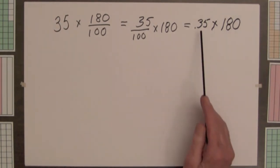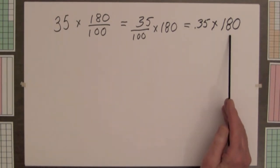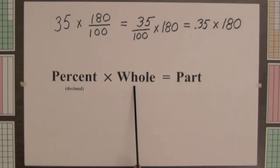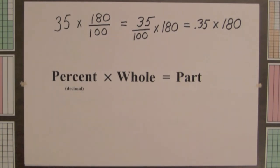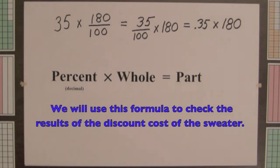This product — decimal times whole — is an example of the formula: percent times whole equals part. Given any two of the three numbers in this formula, we can find the third.